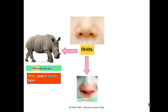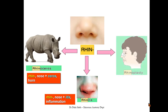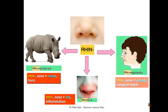Another example: if we add the suffix '-itis' to the end of 'rhin' we end up with the medical term 'rhinitis', meaning inflammation of the nose. If you add the suffix '-plasty' we end up with 'rhinoplasty', meaning surgical repair of the nose, and so on.